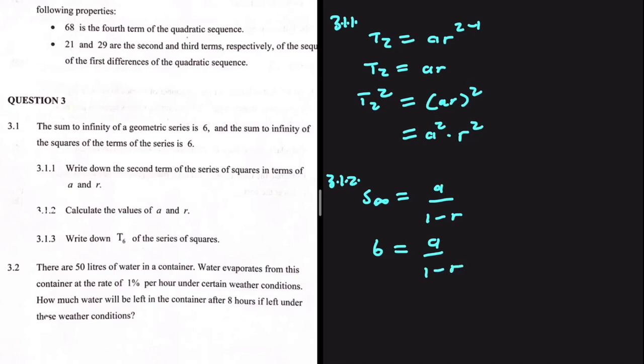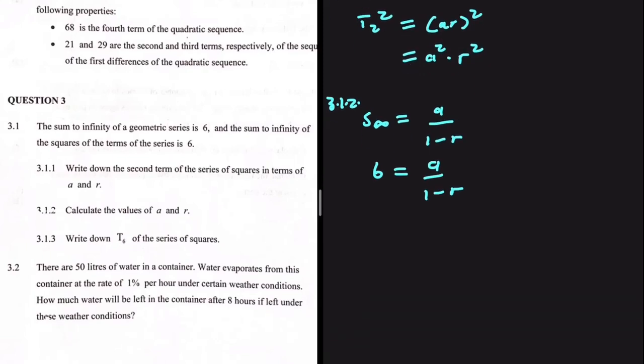We want to find the value of A and the value of R. If we cross multiply, we get A equals 6 minus 6R. We have two variables, A and R, so we need at least another equation. We can let this be equation 1.